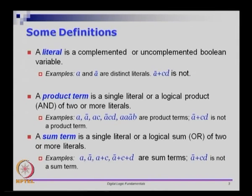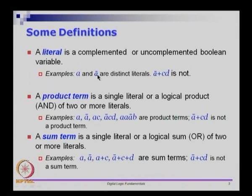Now let us move on to some definitions. These are fairly simple but necessary, so that whatever we discuss later becomes clearer. We start with a single variable, or a literal. A literal is essentially a variable which is either in the complemented or in the uncomplemented form. For example, 'a' is a single variable in uncomplemented form; 'a bar' is in complemented form. So a and a bar are two different literals of the same variable a. The expression a bar + cd is not a literal because it is a combination of multiple variables — a literal must be a single variable in complemented or uncomplemented form.